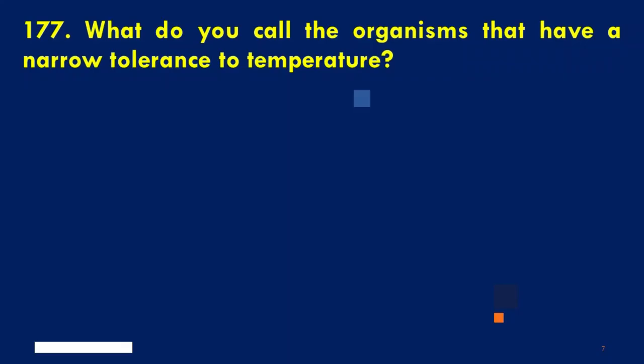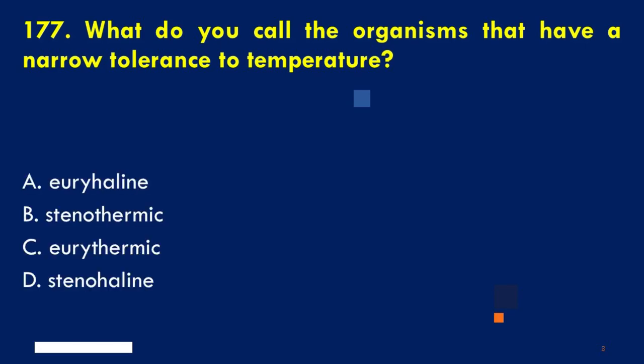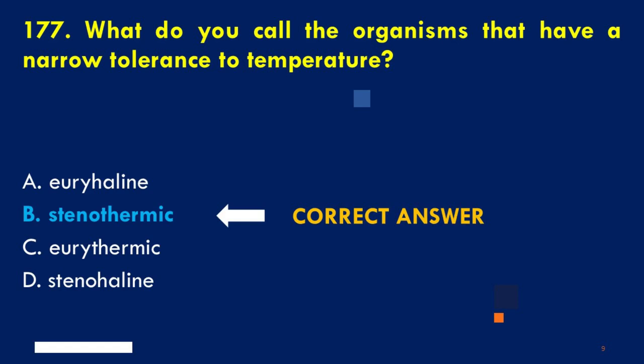What do you call the organisms that have a narrow tolerance to temperature? A. Euryhaline, B. Stenothermic, C. Eurythermic, D. Stenohaline. The correct answer is B. Stenothermic.